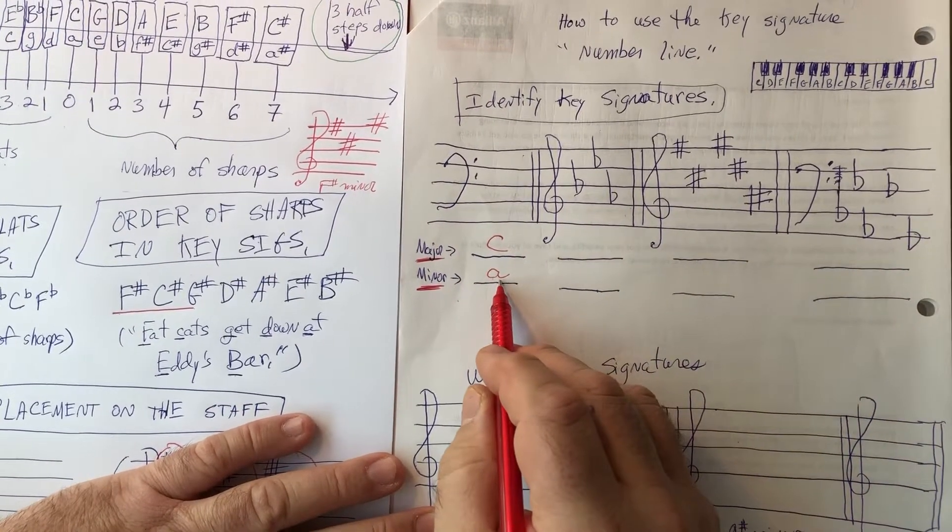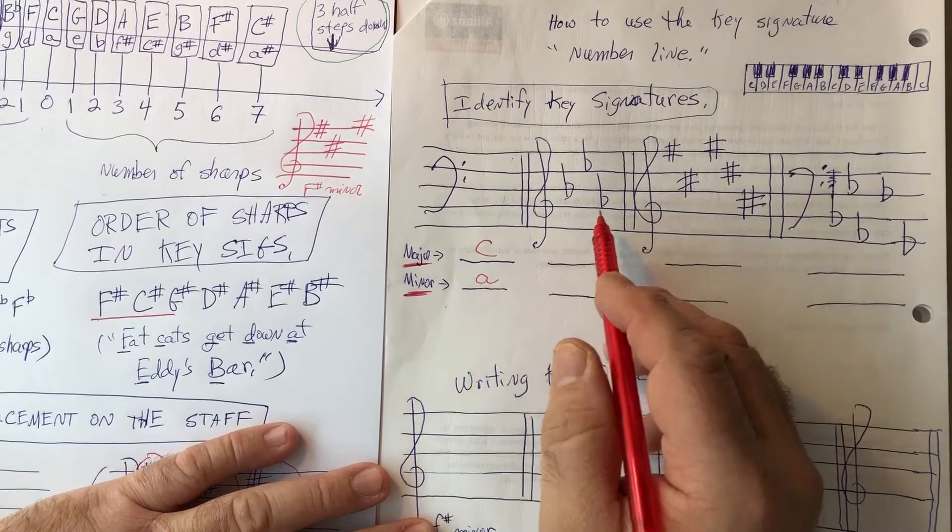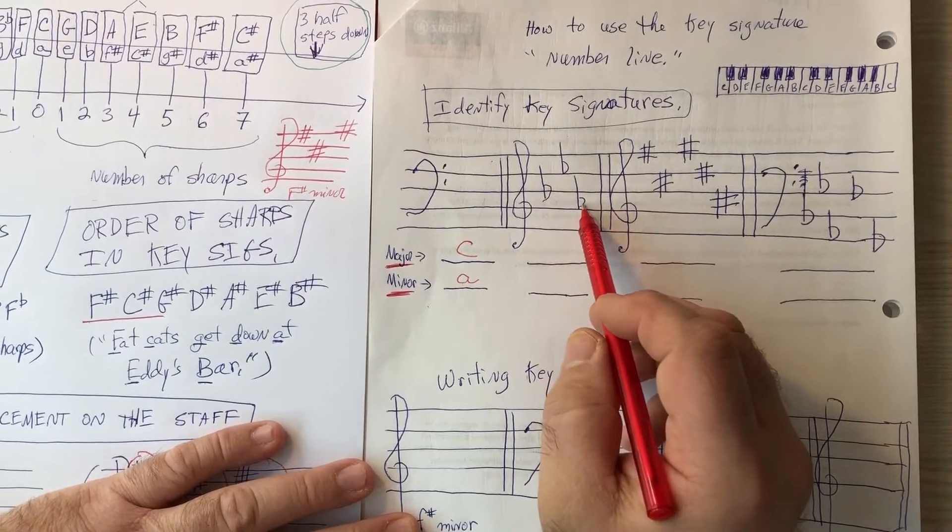Normally use lowercase for minor, that's not required. The next one we see we have flats and there are three of them. Okay, so three flats.